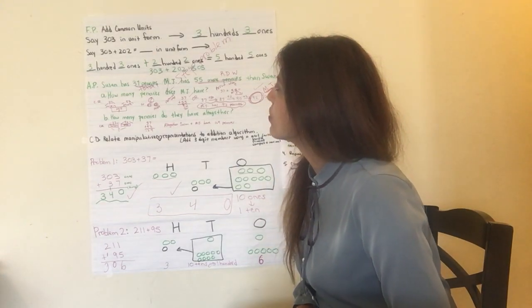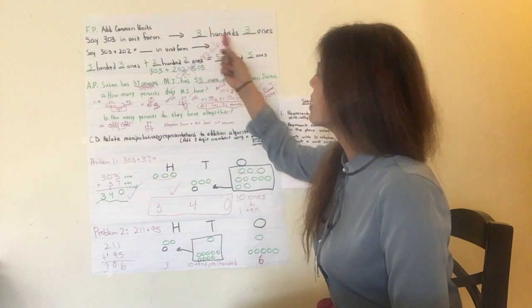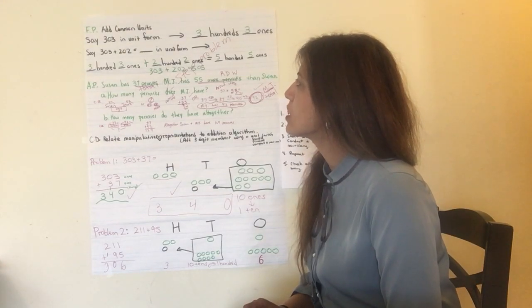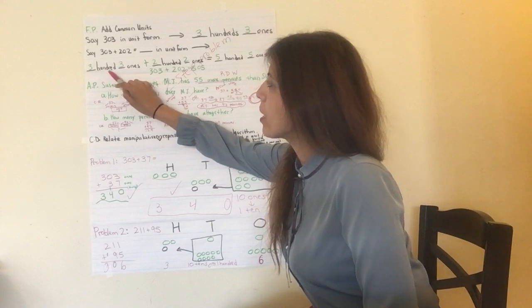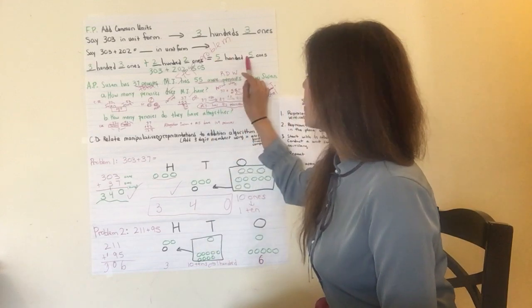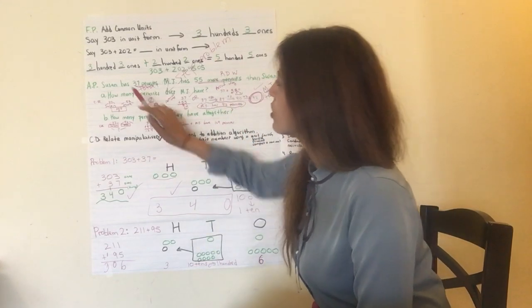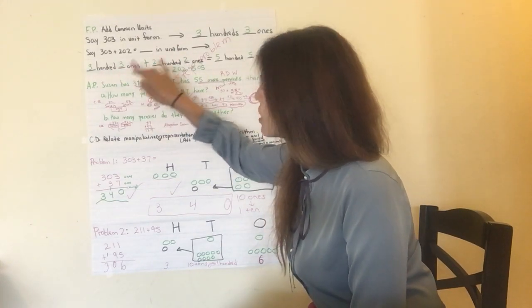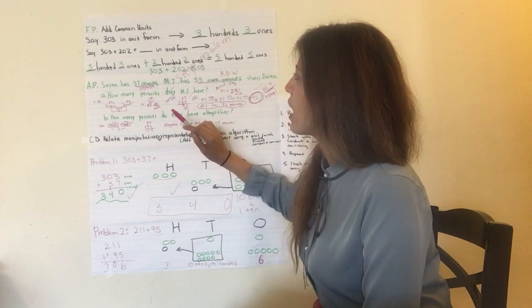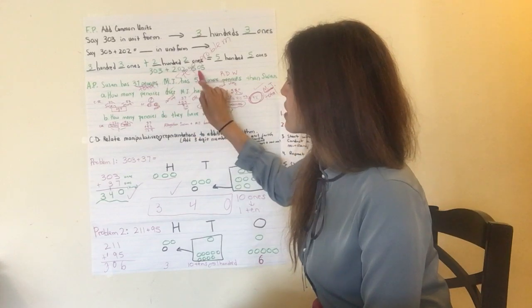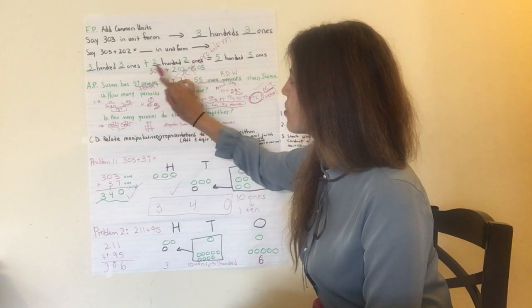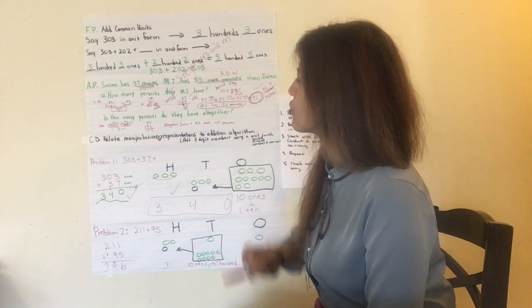So here we say 303 in unit form. 300 and 3 ones. Good job. Now say 303 plus 202 using the unit form. You have 300, 3 ones plus 200 and 2 ones, which equals 500 and 5 ones. Good job. So basically you look at the common units. You're adding the 3 ones with the 2 ones. You're adding the 300 with the 200.